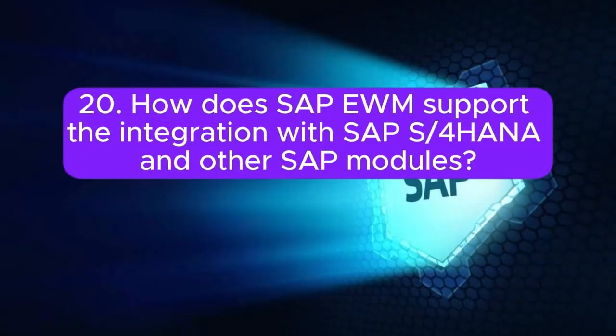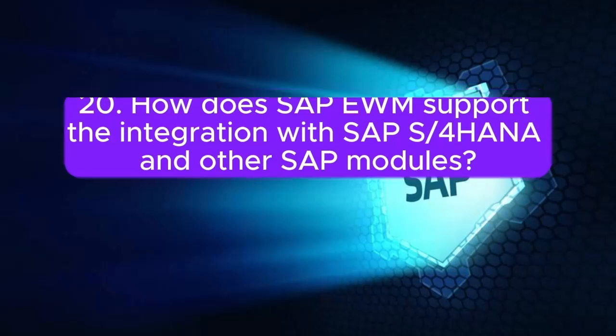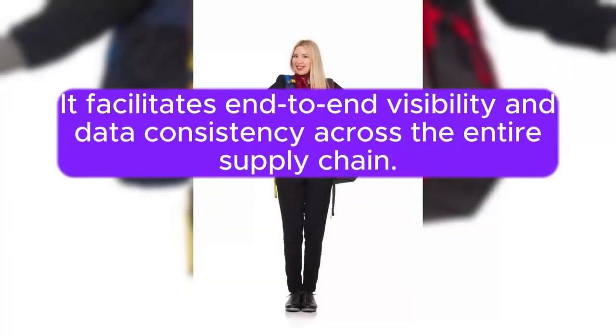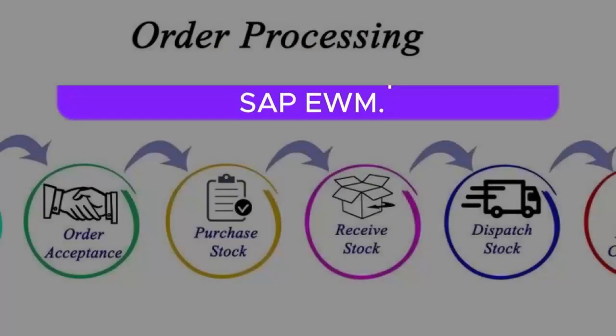Question 20: How does SAP EWM support the integration with SAP S/4HANA and other SAP modules? SAP EWM integrates seamlessly with SAP S/4HANA and other SAP modules, ensuring a holistic approach to business processes. It facilitates end-to-end visibility and data consistency across the entire supply chain.